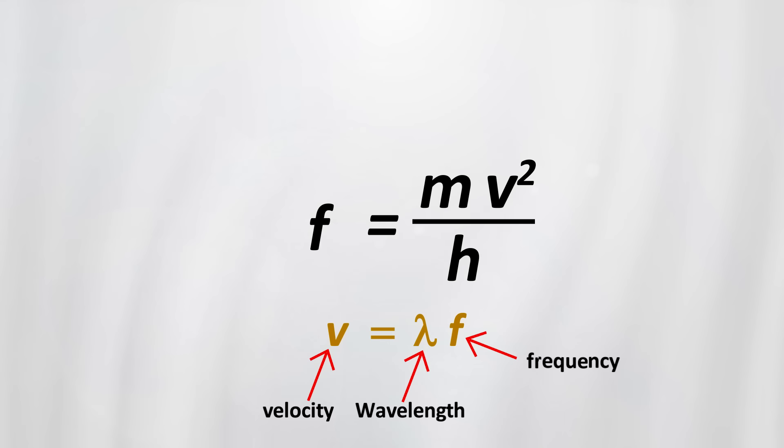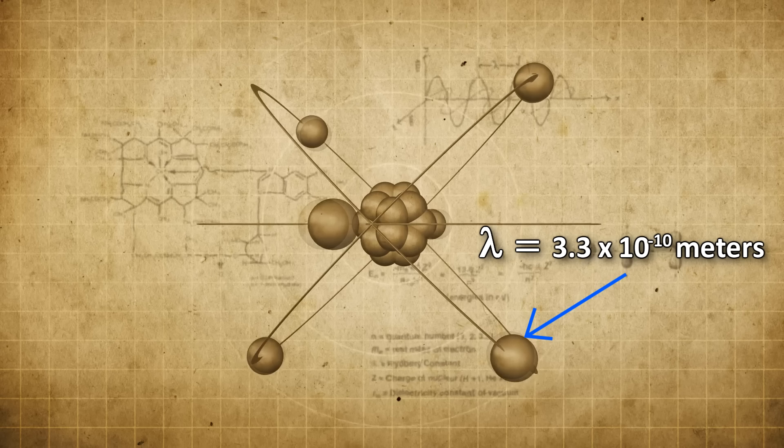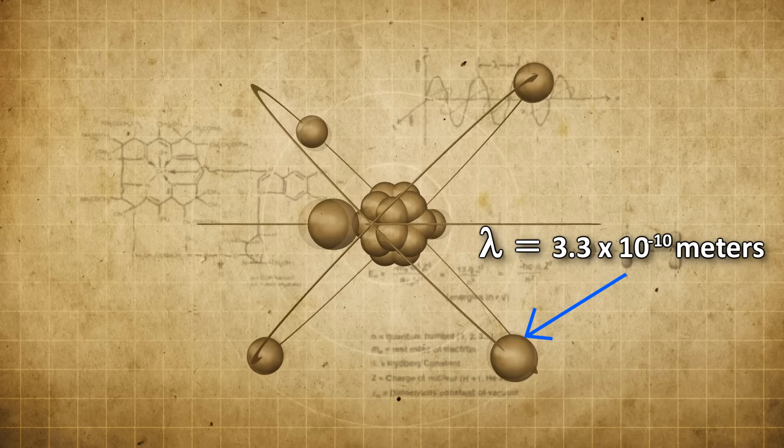How did he come up with this? Using the original equality mc squared equals hf, we can substitute v for c, velocity for the speed of light. Then we get that f equals mv squared over h. And then, using the relationship velocity equals wavelength times frequency, we get that the wavelength lambda is equal to h, Planck's constant, over mass times velocity, which is also momentum. Using this relationship, we can find the wavelength of any particle. So for example, when we plug in the numbers for an electron in a hydrogen atom, we find that its wavelength is about 3.3 times 10 to the negative 10 meters. An atom has a radius of about 10 to the negative 10 meters. So its electron has a de Broglie wavelength of about the size of an atom.